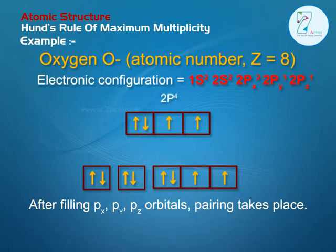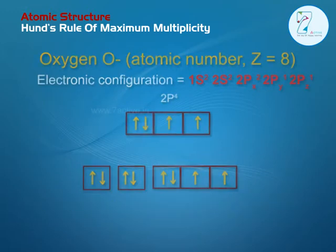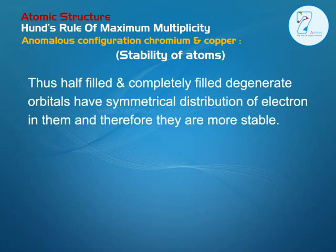This is called Hund's rule. Anomalous configuration: chromium and copper. This concept explains the reason for stability of chromium and copper atoms. Half-filled and completely filled degenerate orbitals have symmetrical distribution of electrons and therefore are more stable.